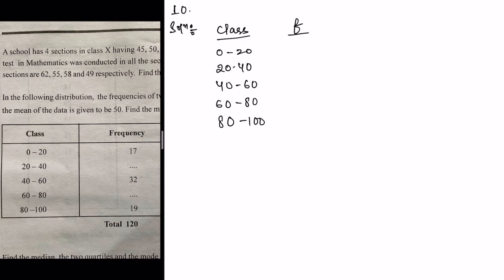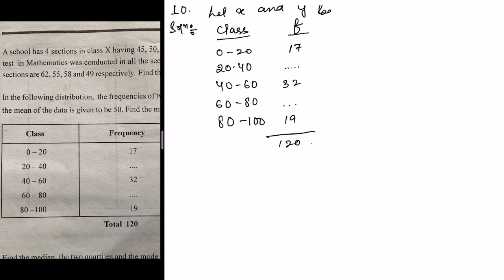Next, write down the frequency column f. The frequencies are: 17, then a missing value (let's call it x), then 32, another missing value (let's call it y), and 19. The total is 120. Let x and y be the missing frequencies.